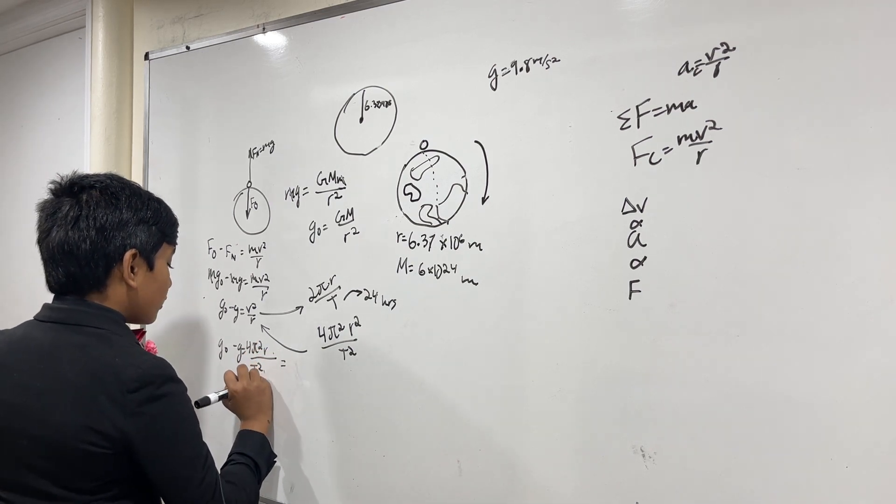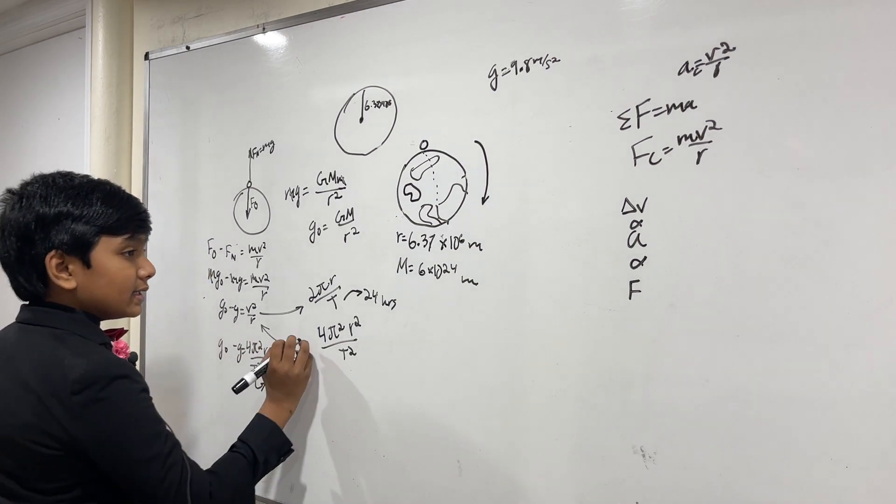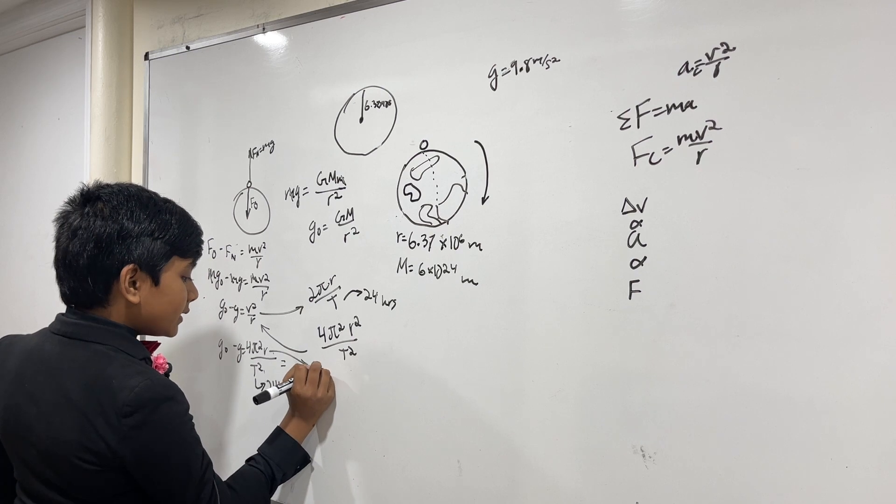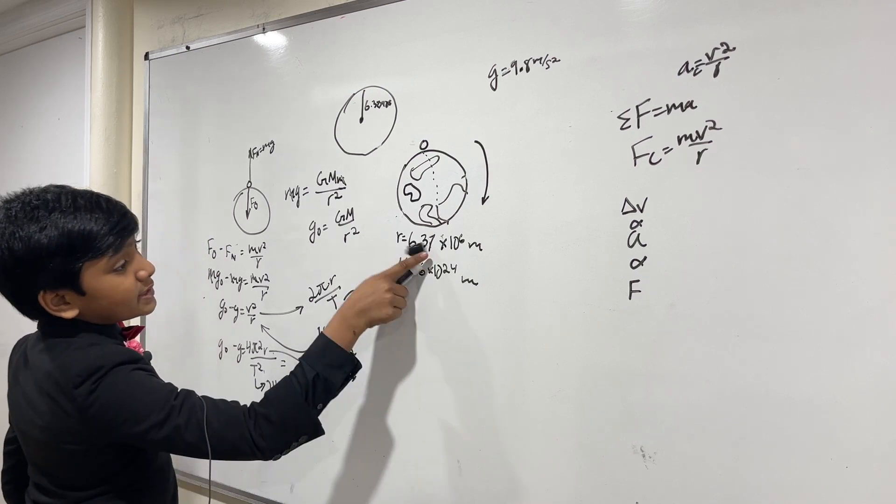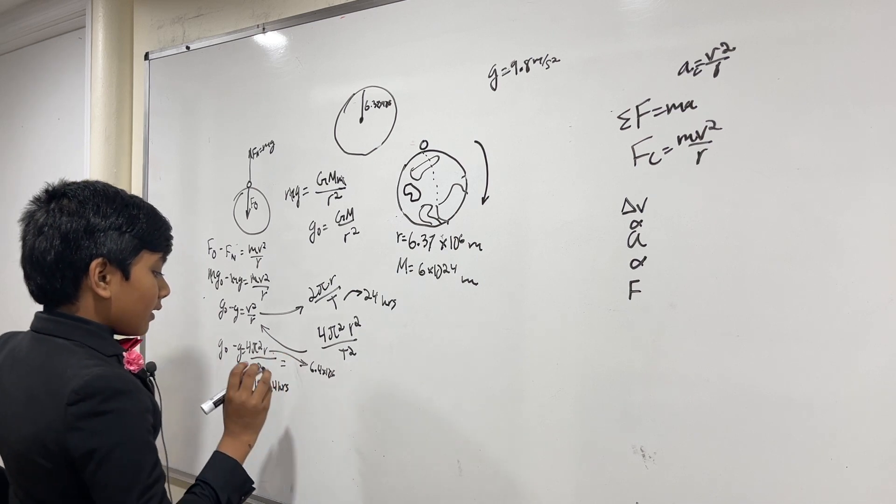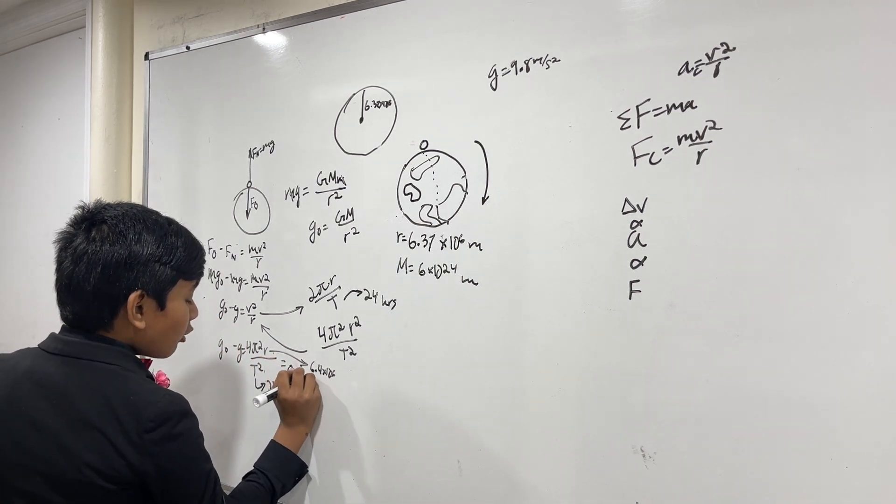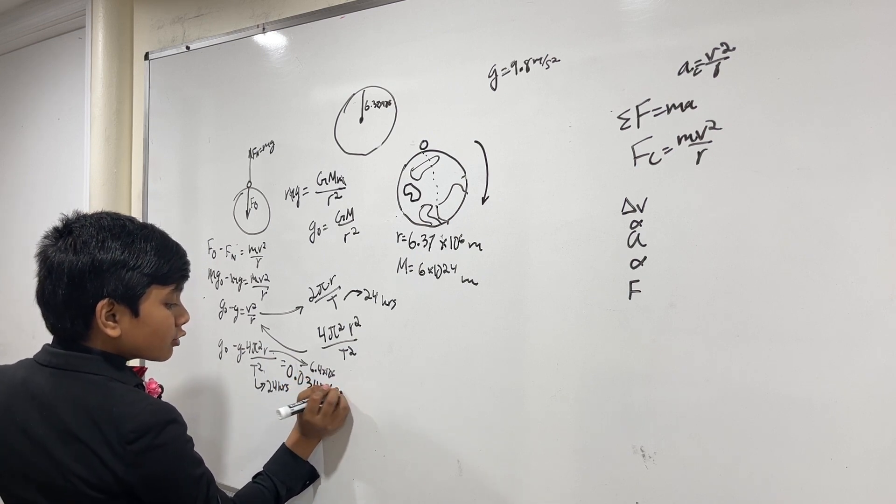Which, if you do all of this math, this is 24 hours for your reference. And this is 6.4 times 10 to the 6, or 6.37. Given all of those as reference, and the source here is trust me, bro. The answer is about 0.034 meters per second squared.